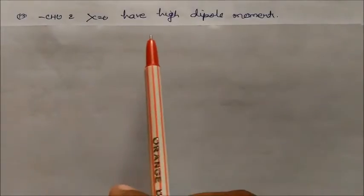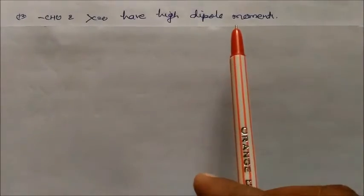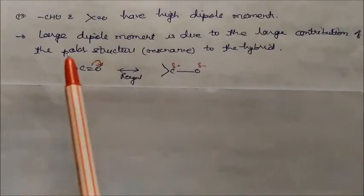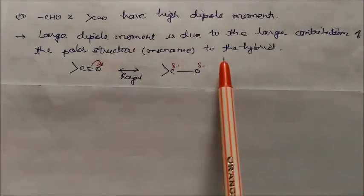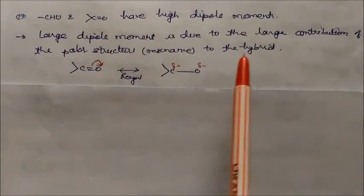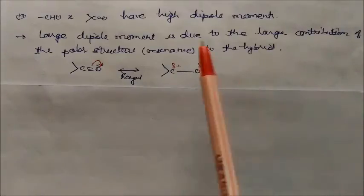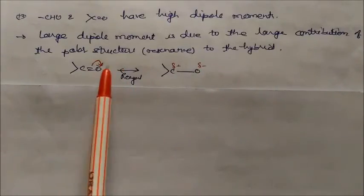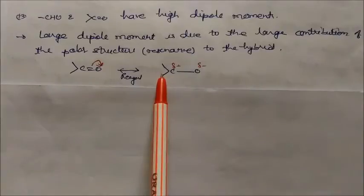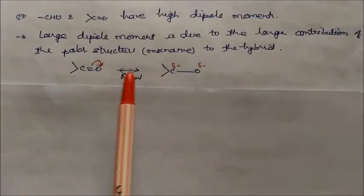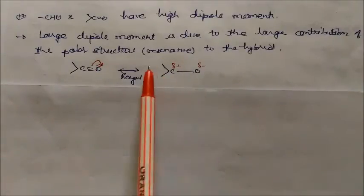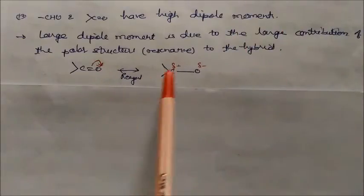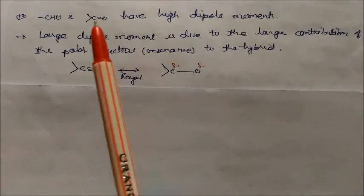Aldehydes and ketones have high dipole moments. This is because of the large contribution of the polar resonance structure to the hybrid — the carbonyl group delocalizes to give negative charge on oxygen and positive charge on carbon. Due to this polar nature of the carbonyl group, aldehydes and ketones have high dipole moments.